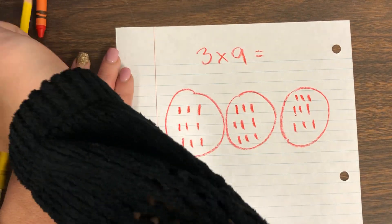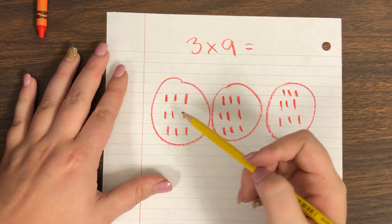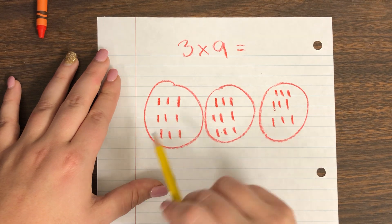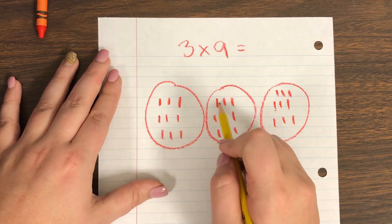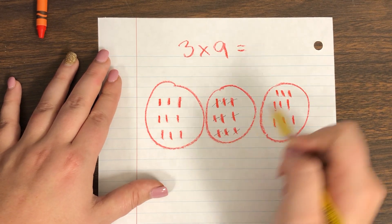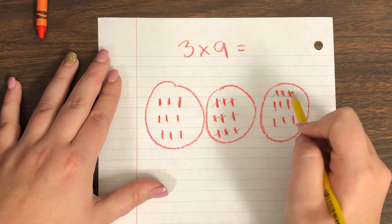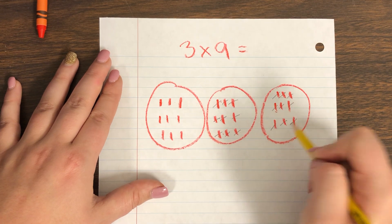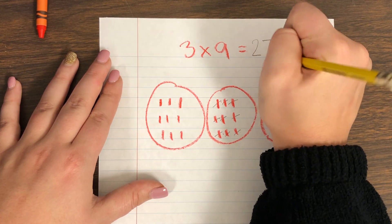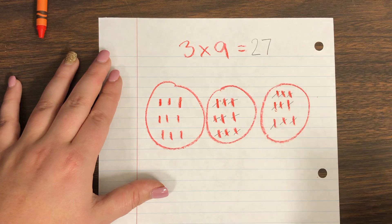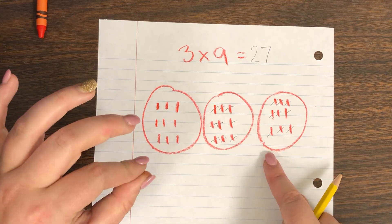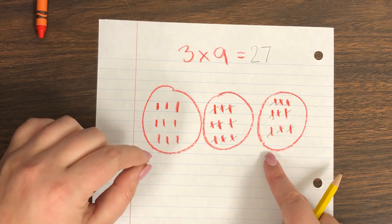Alright, now I'm going to go back and count them up to find my product. I know there are 9 in the first group, so starting from 9: 10, 11, 12, 13, 14, 15, 16, 17, 18, 19, 20, 21, 22, 23, 24, 25, 26, 27. I would recommend not counting as fast as I did because you might get confused — so go slow, take your time, and make sure you get the right answer.